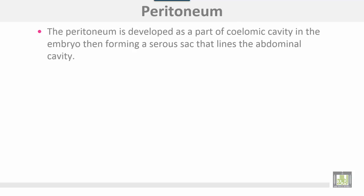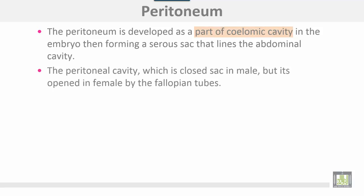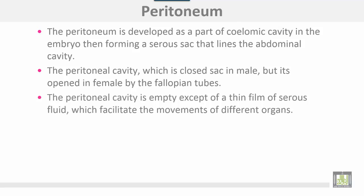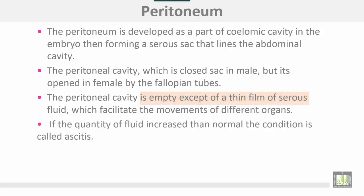The peritoneum is developed as part of the coelomic cavity in the embryo, forming a serous sac that lines the abdominal cavity. The peritoneal cavity is a closed sac in males but is open in females via the fallopian tubes. The peritoneal cavity is empty except for a thin film of serous fluid which facilitates the movements of different organs. If the quantity of fluid increases beyond normal, the condition is called ascites.